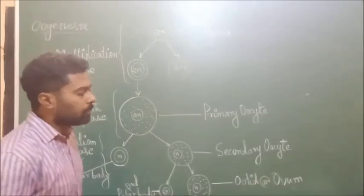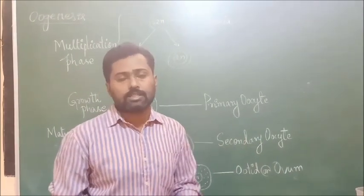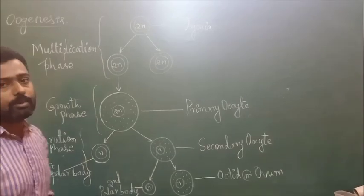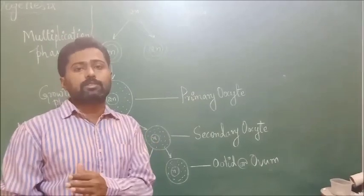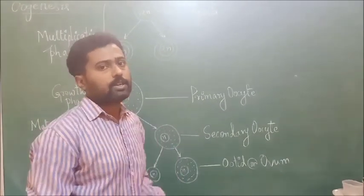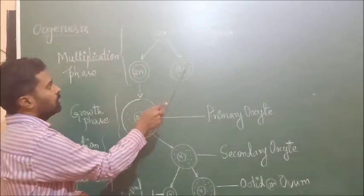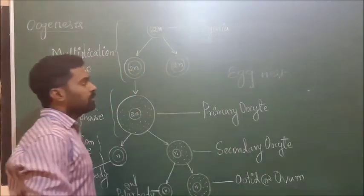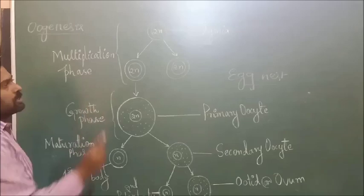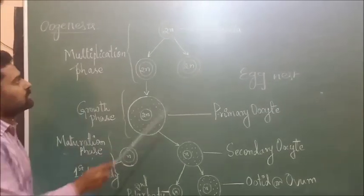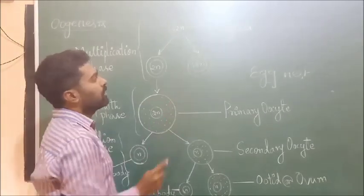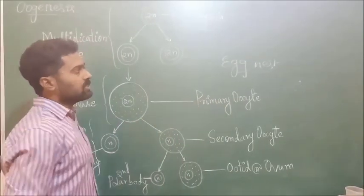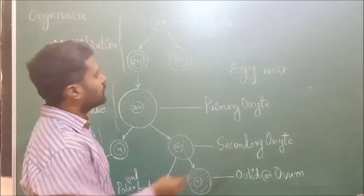During the multiplication phase, the germinal epithelial cells of the ovary — which line the ovary — divide repeatedly by mitotic divisions and produce many follicles, in the fetal stage at about 25 weeks old. This produces many rounded masses called egg nests, which in turn produce follicles. The germinal epithelial cells divide and produce many diploid structures called oogonia or ovum mother cells.